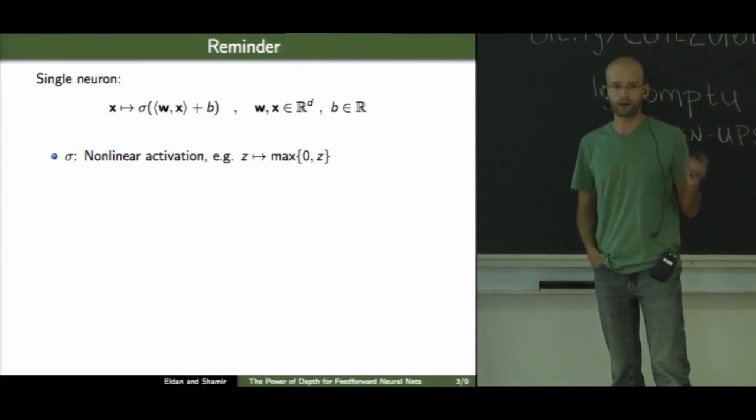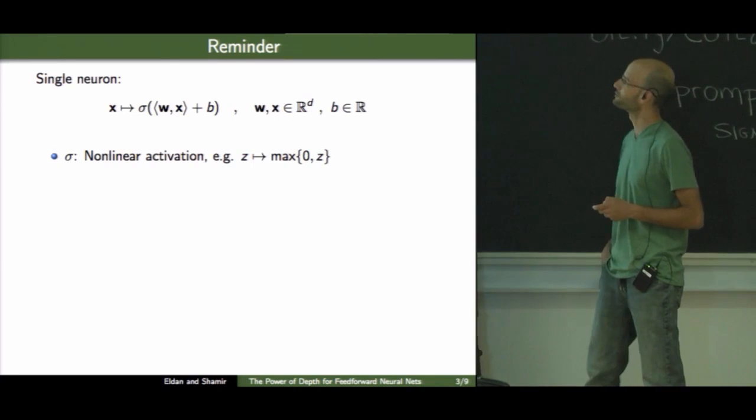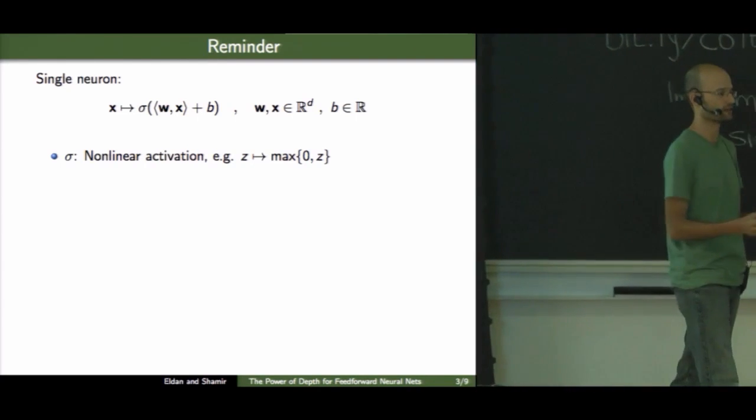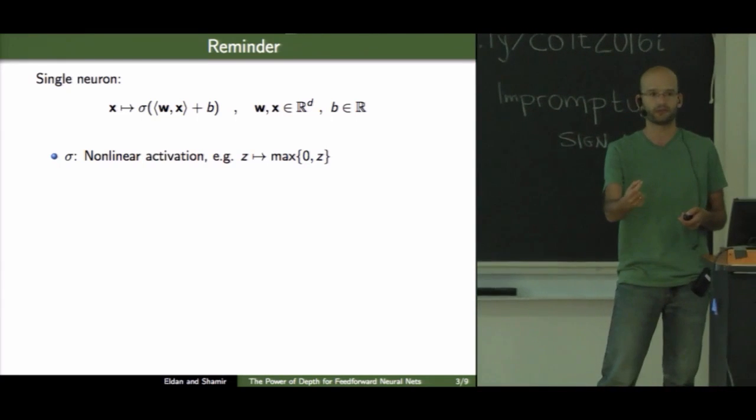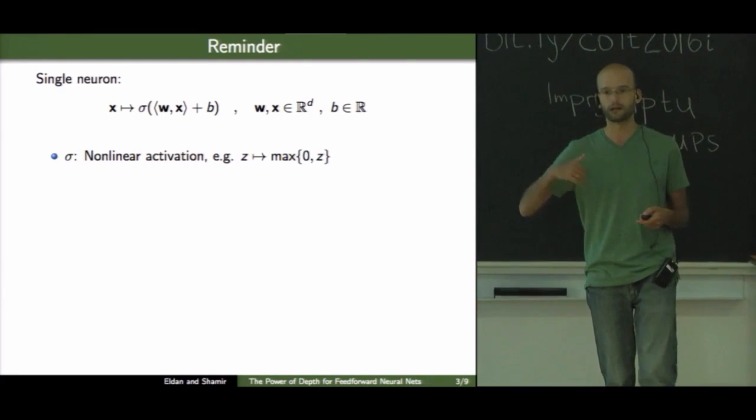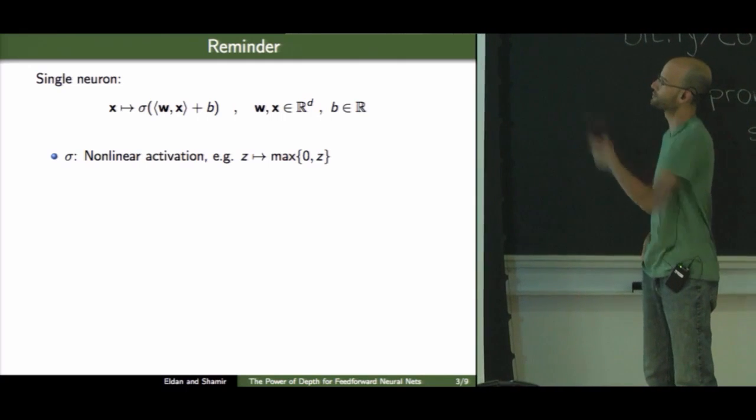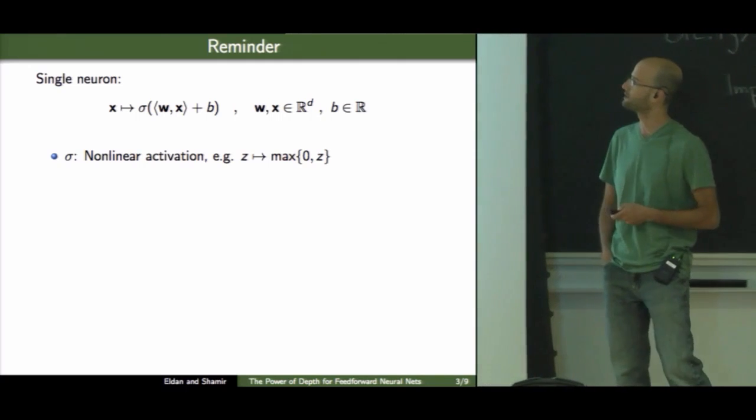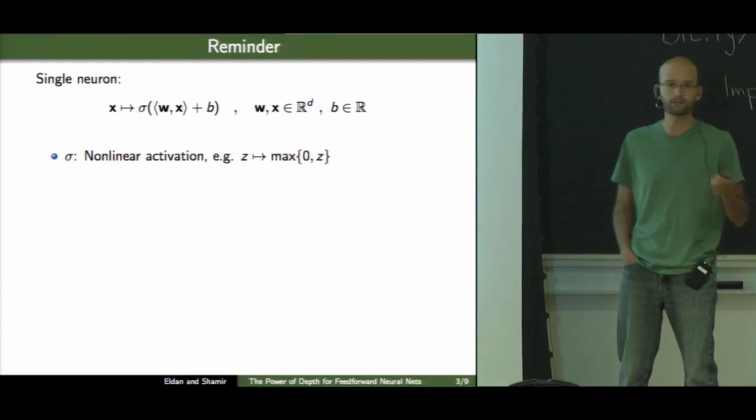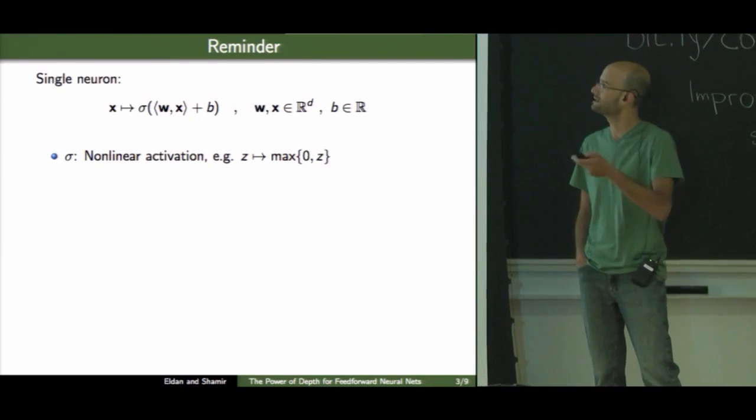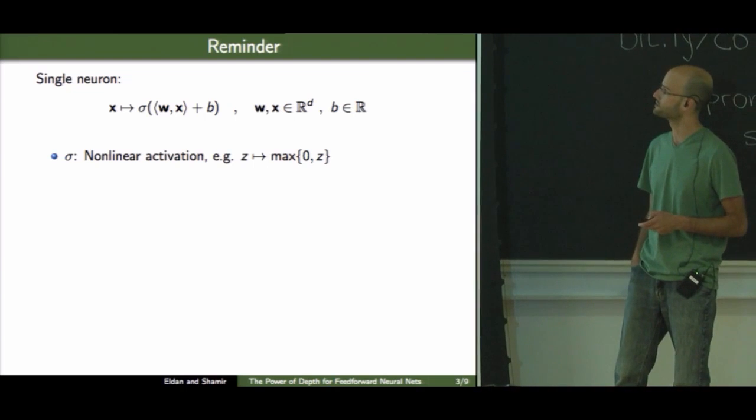Before continuing, a quick reminder of what are neural networks. These are composed of single neurons, which usually, given an input x which is a vector, they compute some linear transformation of this vector, and then push it through some kind of non-linearity. It can be a sigmoid, it can be a relu, such as the one here. Given z, output the max of zero and z.